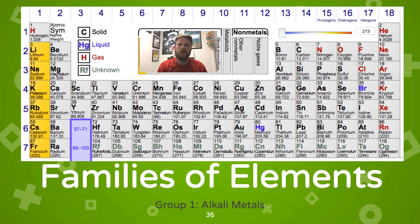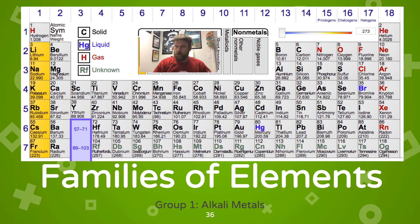Let's spend some time talking about specific groups on the periodic table. Groups are also known as families. Just like families have individuals with shared characteristics, a family on the periodic table consists of elements that have similar physical and chemical characteristics.